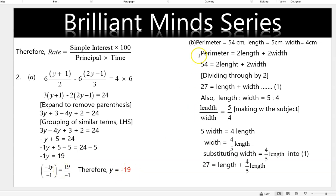Perimeter according to the question is 54 centimeters, length ratio 5, width ratio 4. We know that the perimeter of a rectangle is 2L plus 2W, so 54 equals 2L plus 2W. Since there is 2 in common on the right hand side, we divide through by 2 to get 27 equals length plus width — this is equation 1.